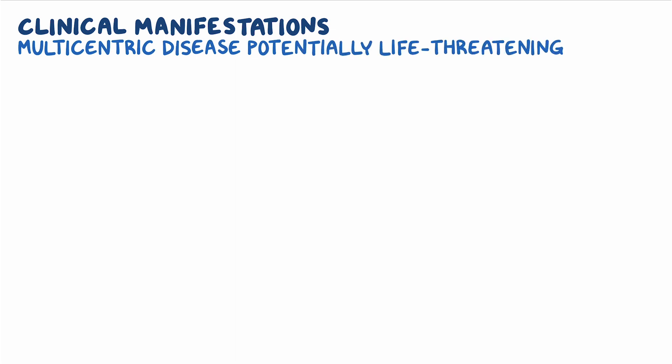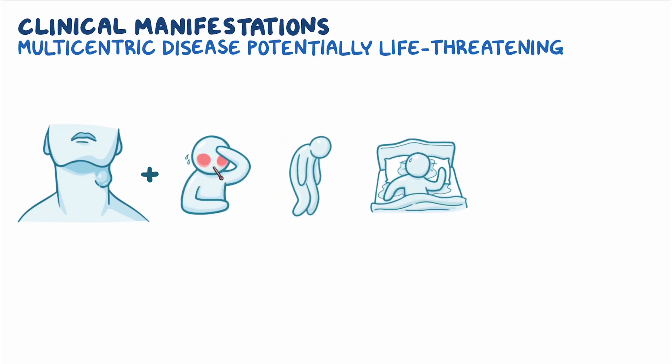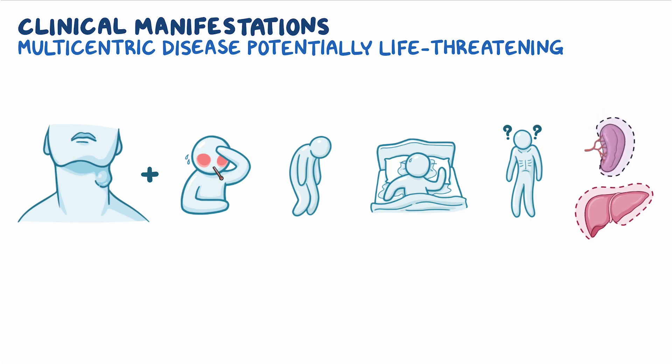On the other hand, multicentric Castleman disease is a potentially life-threatening condition, where individuals experience a wide range of systemic symptoms in addition to enlargement of the lymph nodes. These can include flu-like symptoms such as fever, fatigue, night sweats, and unintentional weight loss, as well as enlargement of the liver and spleen.